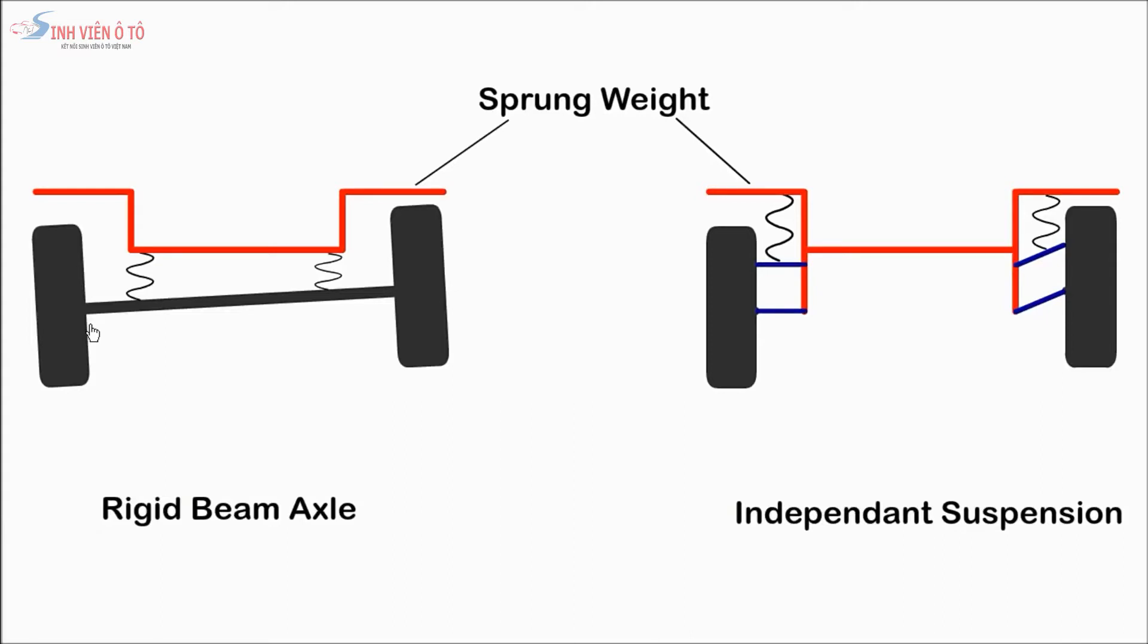With an independent suspension, each wheel is connected by its own linkage and its movement does not affect the other wheel. An independent suspension has less unsprung weight and allows the wheels to move independently of each other.